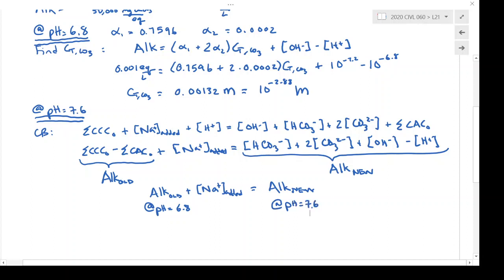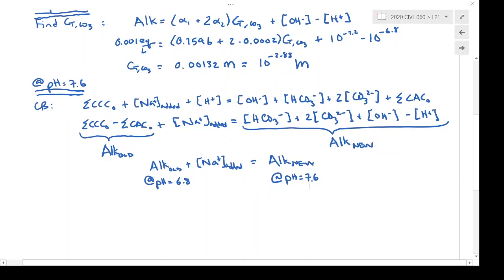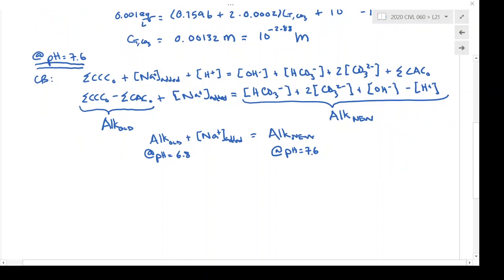So I can solve this. And just as a reminder, I'm solving for the sodium concentration because that's equal to how much sodium hydroxide is added. I'm going to sub in the 0.001 equivalents per liter alkalinity that I calculated above. And then for the ALKNEW, I'm going to use the alpha formulation of this equation. And I looked up the alpha values on my alpha table. And these are 0.9505, that's alpha 1, plus 2 times 0.0019, that's alpha 2. And these are at pH of 7.6.